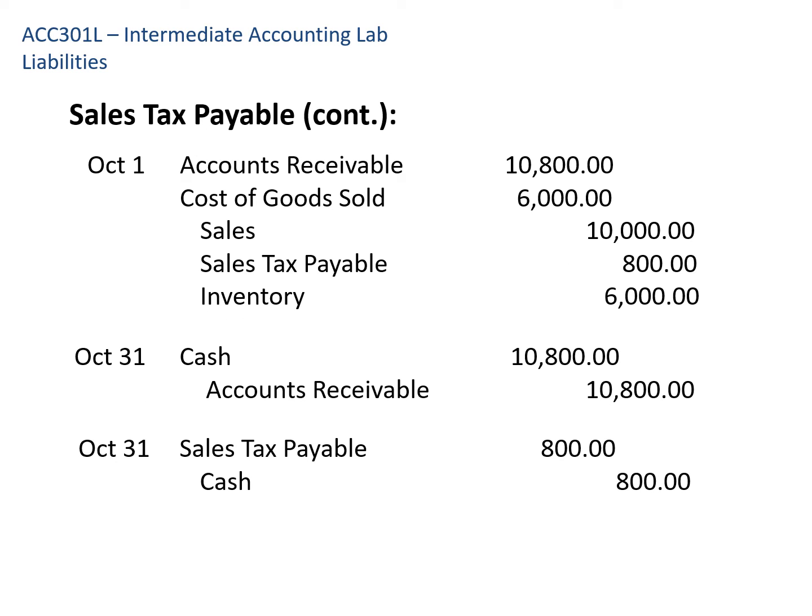To record the sale, we debit accounts receivable for $10,800 — the total amount to collect — and credit sales for $10,000 and sales tax payable for $800 (8% of $10,000). Then we recognize the cost side: debit cost of goods sold for $6,000 and credit inventory for $6,000. When the customer pays, we debit cash for $10,800 and credit accounts receivable for $10,800. Then to pay the government, we debit sales tax payable for $800 and credit cash for $800, taking that liability off the books.